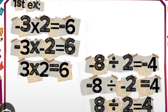So, negative 3 times negative 2, the answer will be positive 6. As you can see, the signs of the numbers are the same.